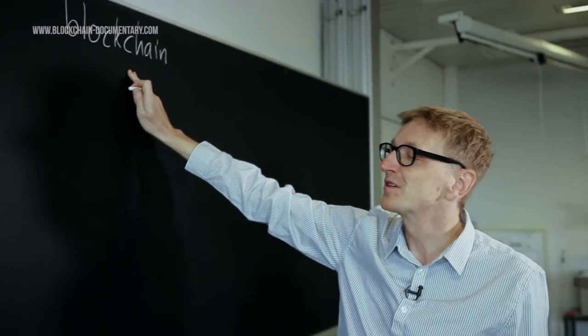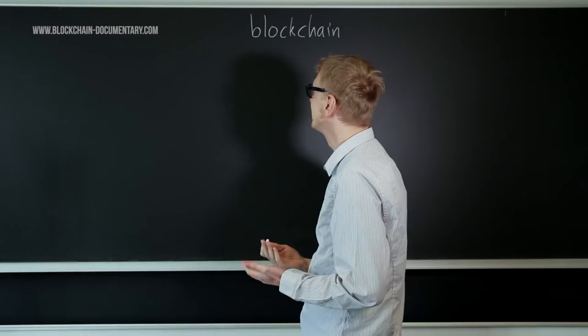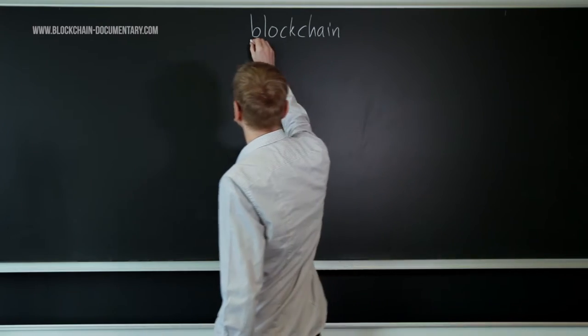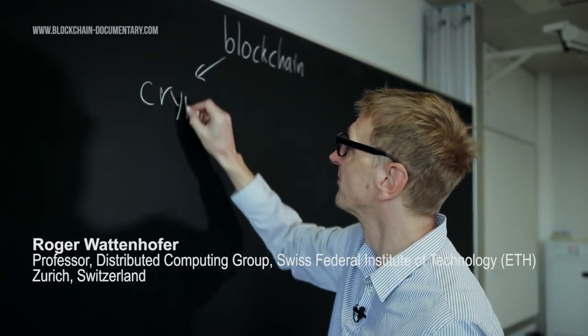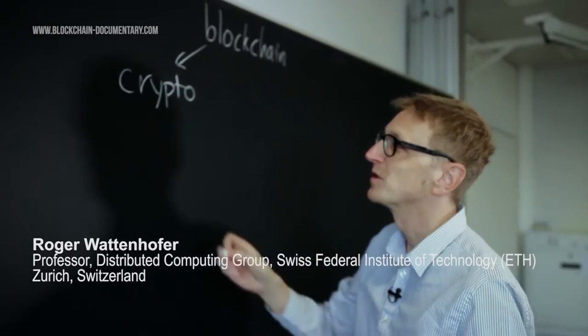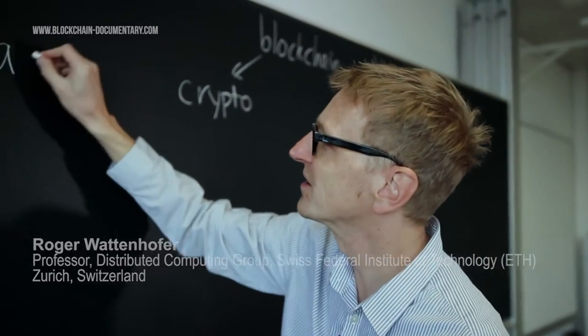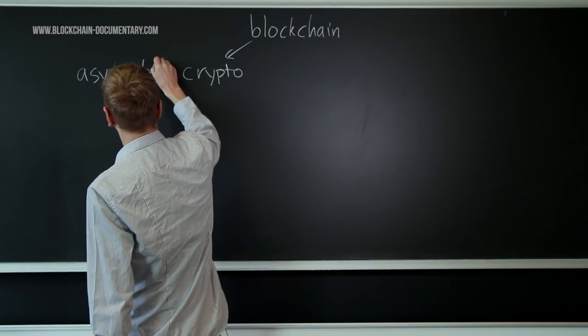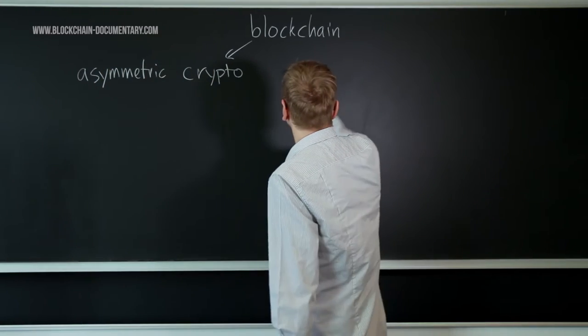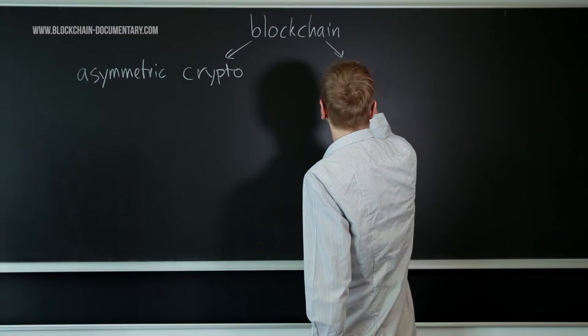For me personally, the blockchain has two main ingredients, two main technical ingredients. One ingredient is cryptography, and when I say cryptography I really mean asymmetric cryptography. And the other ingredient is so-called distributed systems.